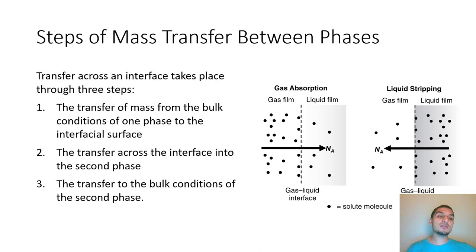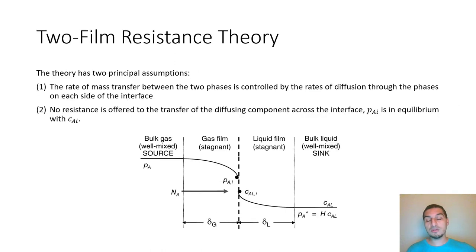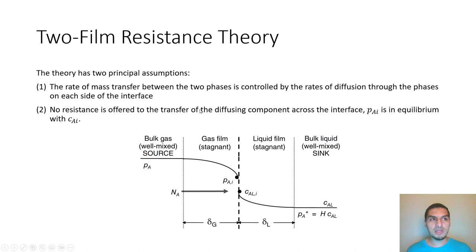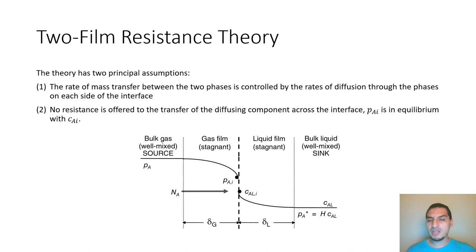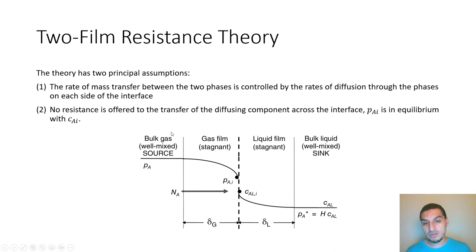Now let's talk about the model we'll use to describe this. This is one of several models, but a very famous one called the two-film theory. We mentioned the film theory before when discussing unidirectional molecular diffusion and equimolar molecular diffusion. It's also conceptually similar to boundary layer theory, though the details differ. This model assumes that mass transfer takes place in a thin film adjacent to the interface.